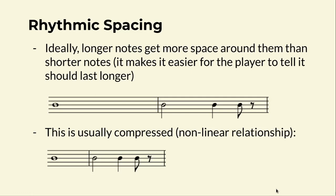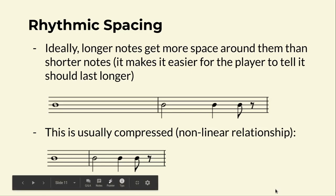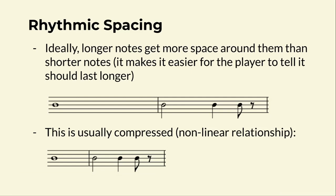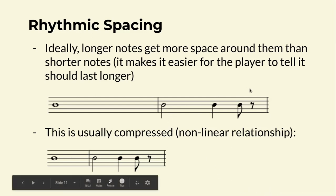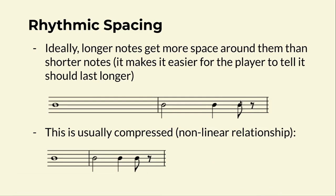Now for the rhythmic spacing algorithm. Usually you want longer notes to have more space around them — a padding to the right — to show that they take longer than other notes. It's just another way to visualize how long each note takes, making it easier for the player to read and play the right rhythm. You'll notice that an eighth note and eighth rest together take up as much space as a quarter note, two quarter notes take up as much space as a half note, and two half notes take up as much space as a whole note — but there's a ton of space after the whole note.